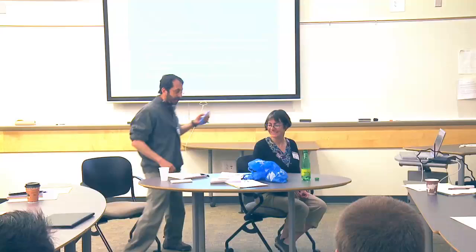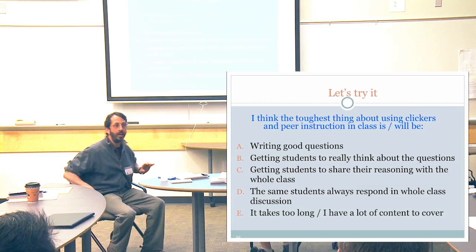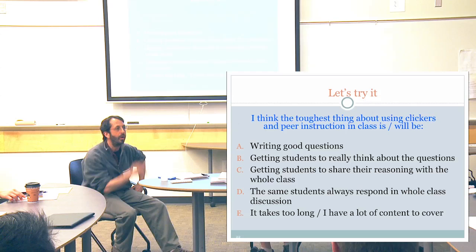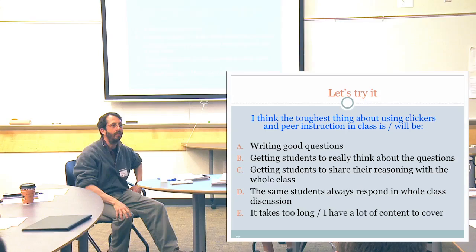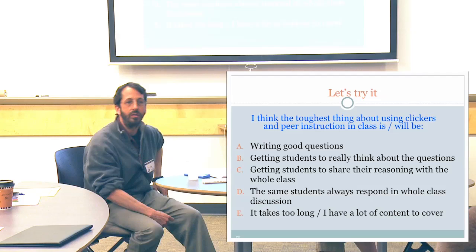I think it's okay to show the distribution here. A and E are popular with one person worrying about D. We're not going to spend a whole lot of time on this right now because we're going to be coming back to what's tough about using clickers throughout the rest of the workshop. But let's have a brief discussion — I'd like to hear whether you wanted something else on this list, or what it is about these options that is bothering you.